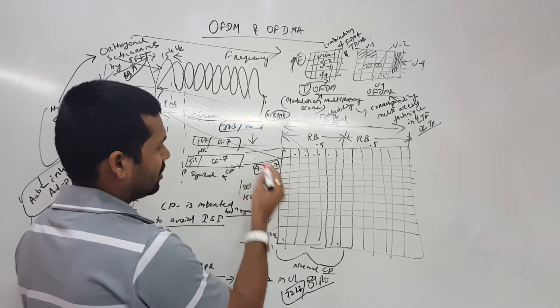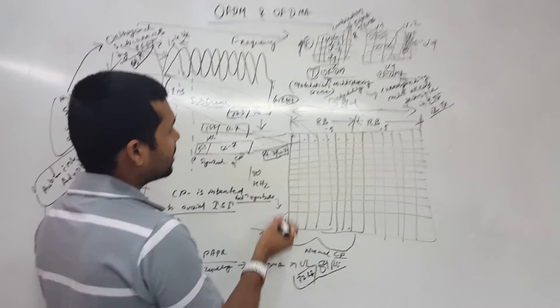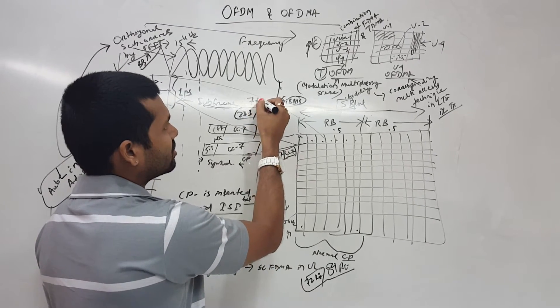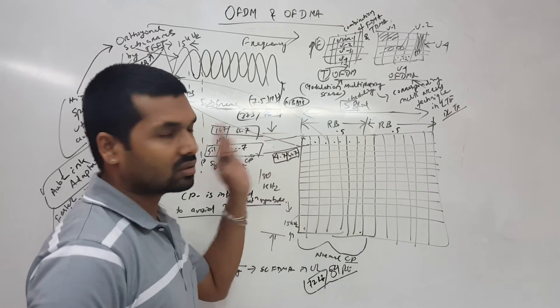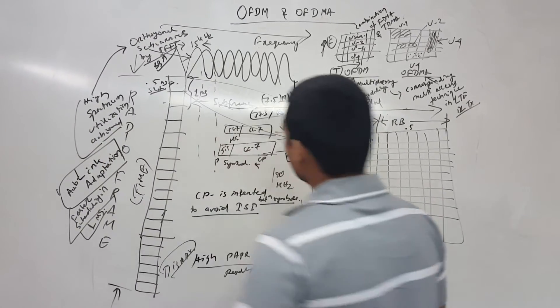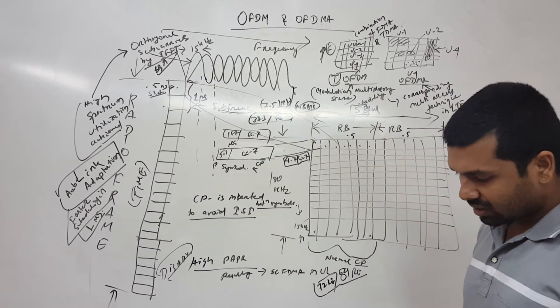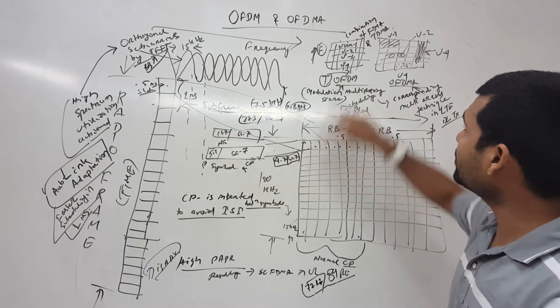There are subcarriers - the subcarriers would be 7.5 kilohertz, but we are not discussing that here right now. This is how the OFDMA works.